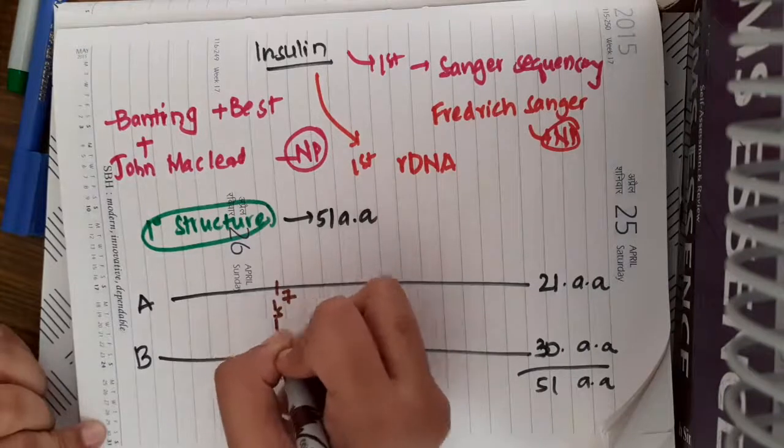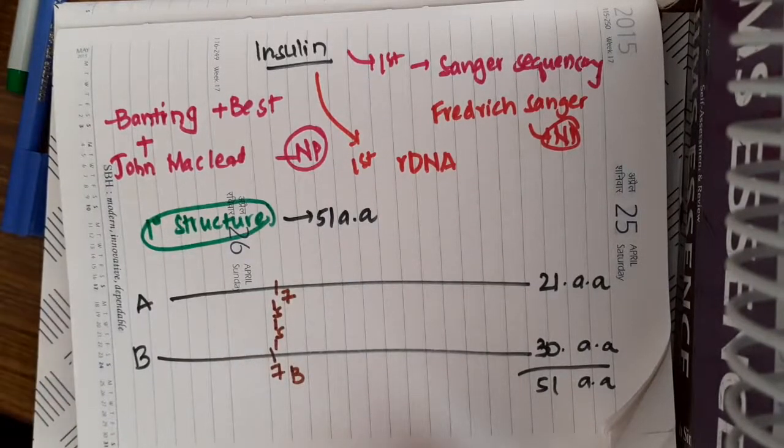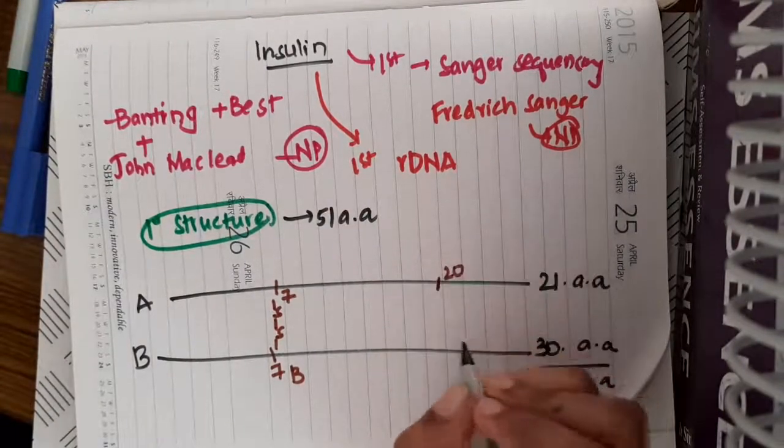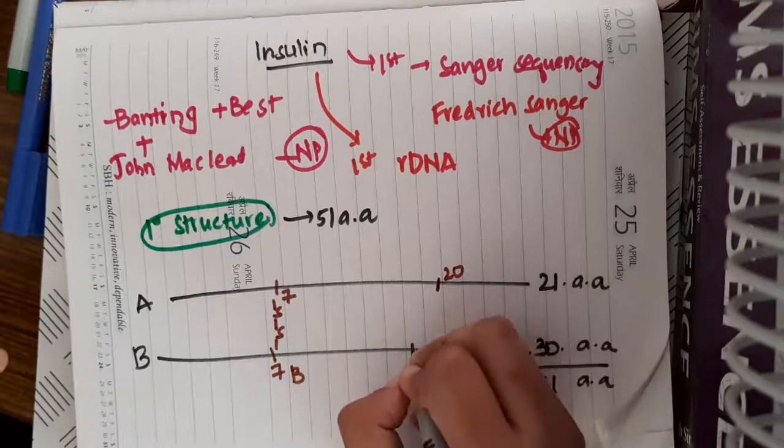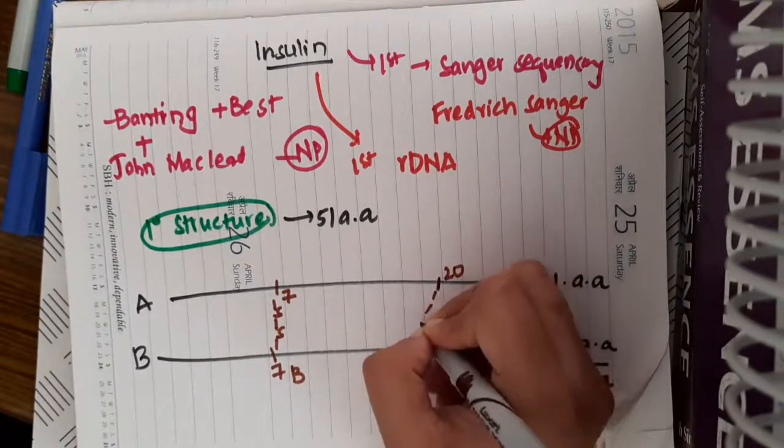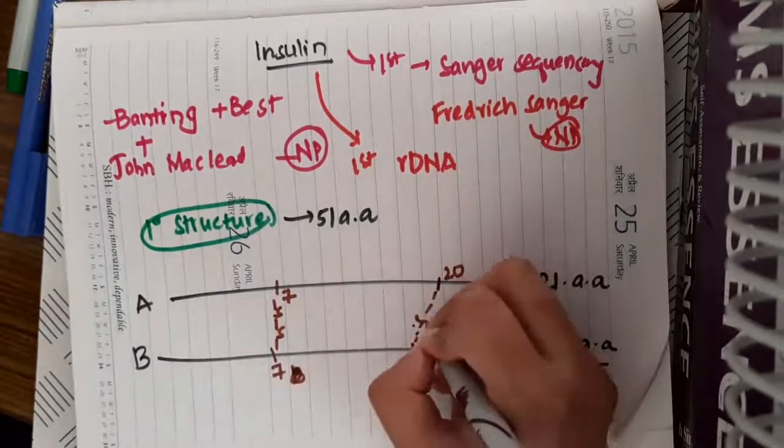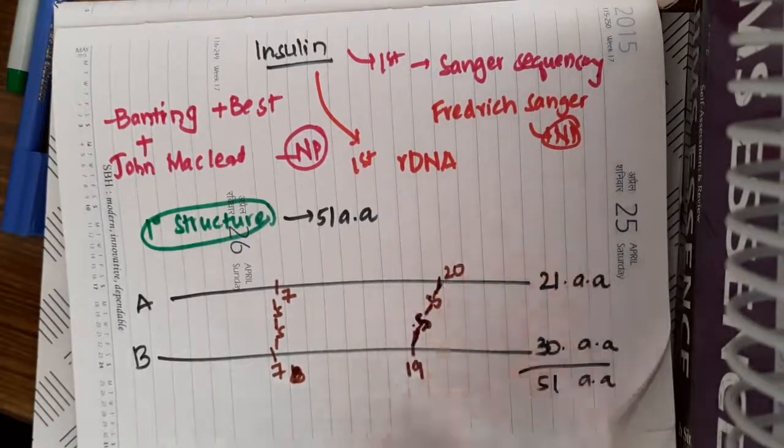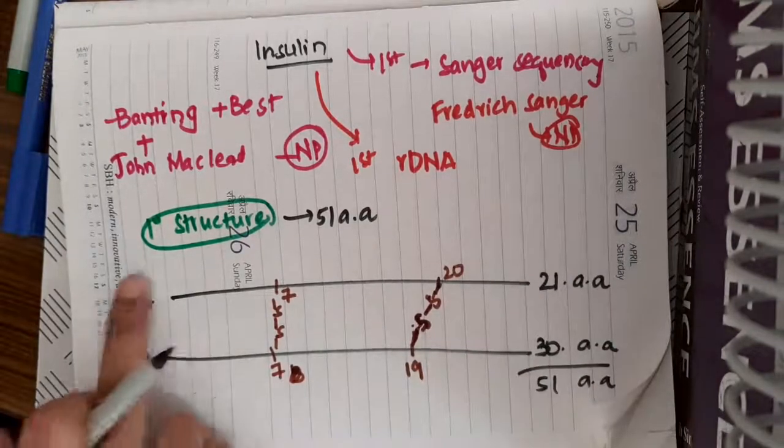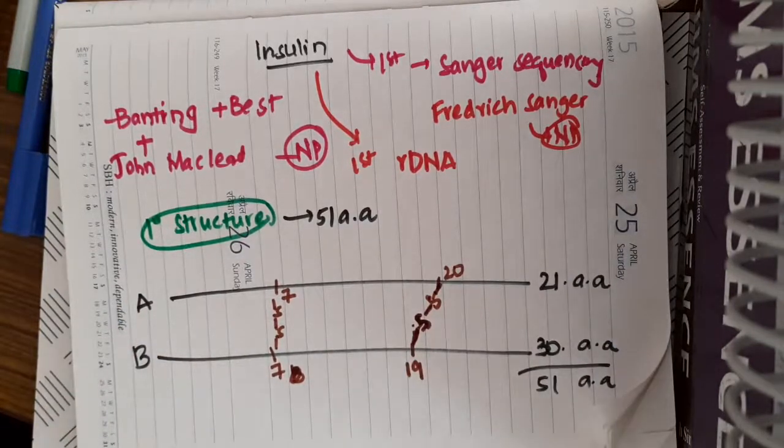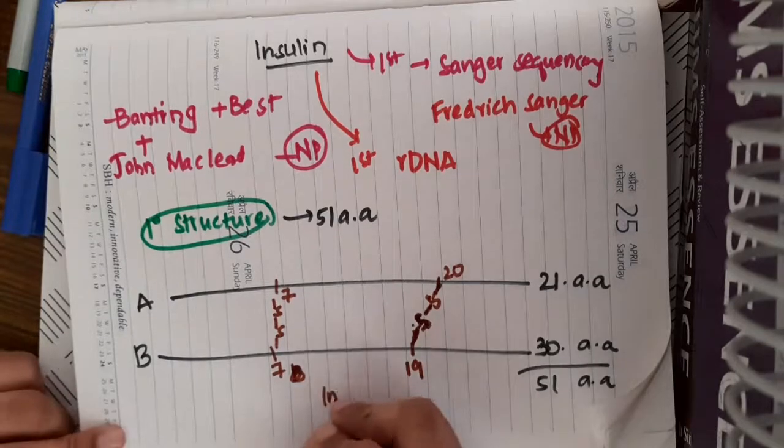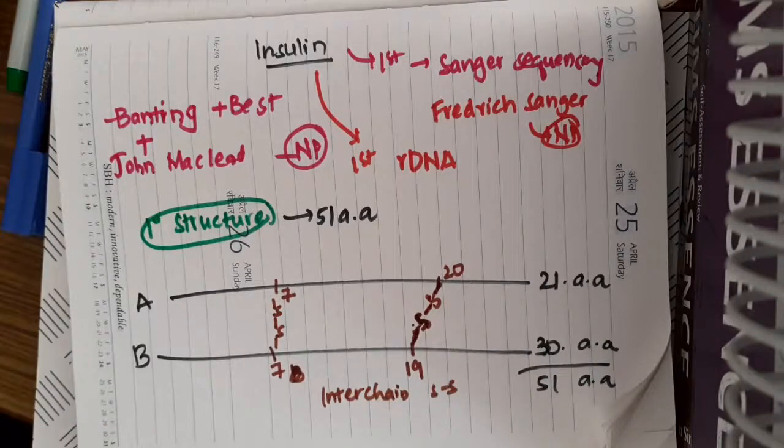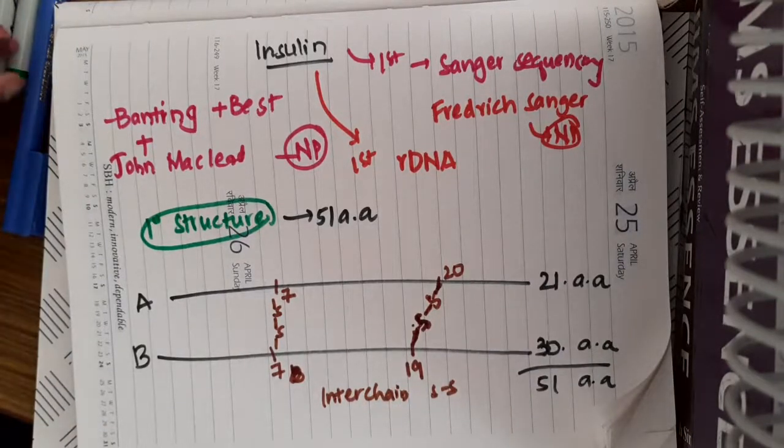The second disulfide bond is present on the 20th amino acid in A chain and 19th amino acid in B chain. These two are inter-chain disulfide bonds because they are present between the A and B chains.